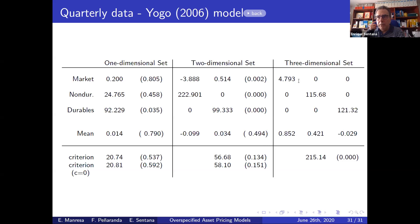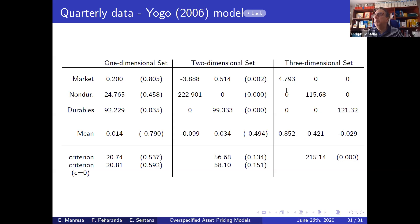Finally, when considering a three-dimensional set — the CAPM, consumption CAPM with non-durable consumption, and consumption CAPM with durable consumption — the over-identifying restriction test indicates that all three models simultaneously don't hold. This is not very surprising because we know the CAPM doesn't hold with Fama-French double-sorted portfolios. But it's a good indication that the procedure we suggest works.